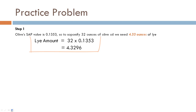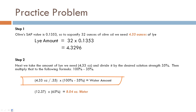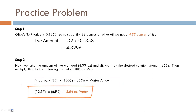We take 32 ounces × 0.1353 (the SAP value for olive oil) = 4.33 ounces of lye. No lye discount was applied here, but if you were doing a lye discount you'd do that step before calculating water. Now for the water: 4.33 ÷ 0.35 = 12.37, then (100 - 35) = 65%, so 12.37 × 0.65 = 8.04 ounces of water. If you didn't get that answer, comment below with your work and I'll help you figure it out.